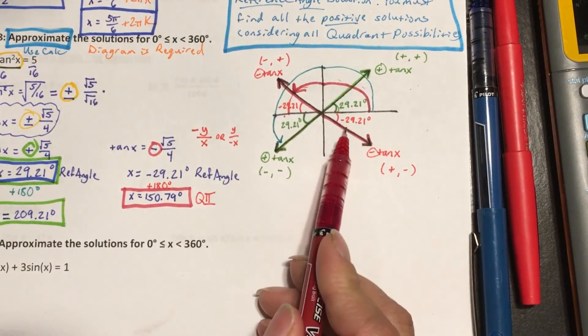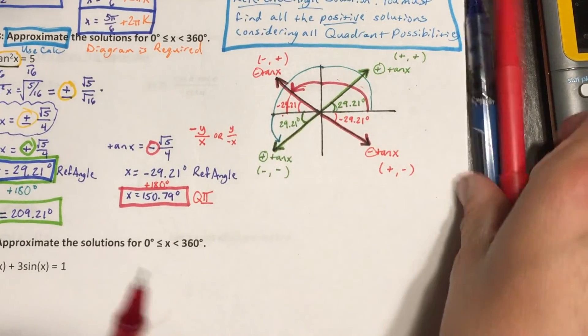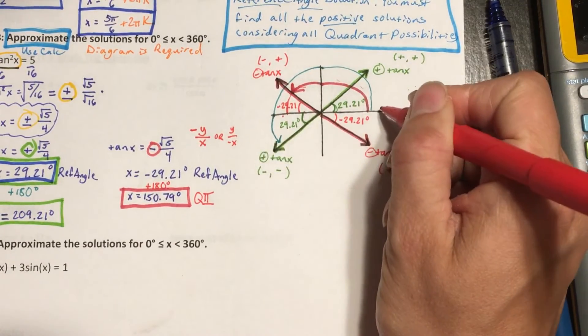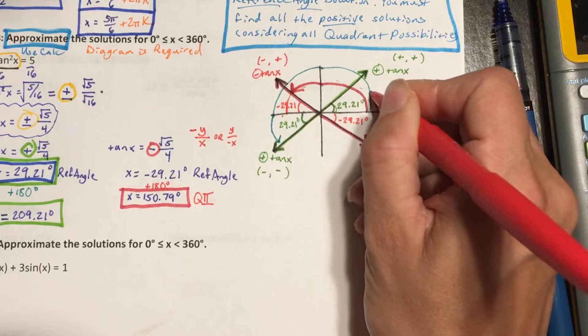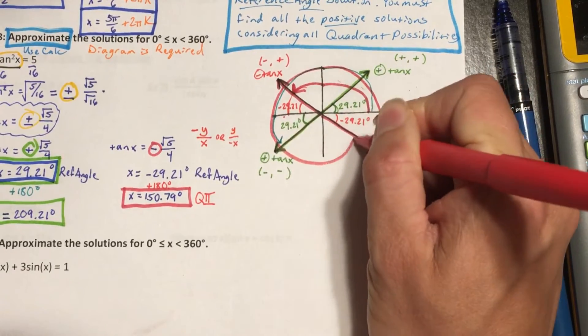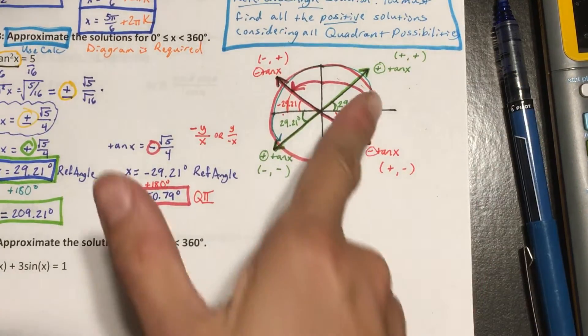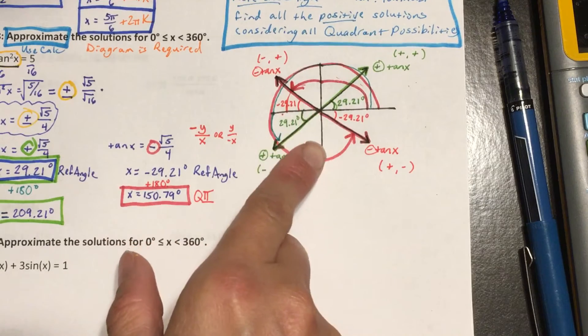So now I want to find this other angle, which is in quadrant 4. So I need to find out this angle measurement. I could add 90 degrees all the way around and